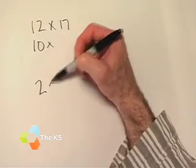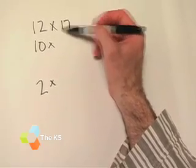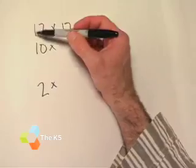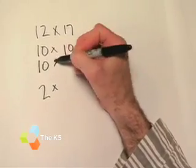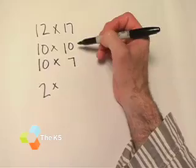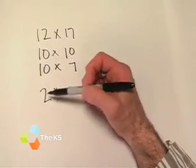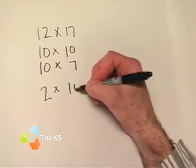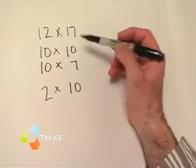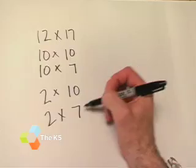Then what we're going to do is take these and multiply them by the broken down 17. 10 times the 10 in the 17, and 10 times the 7 in the 17. Now we'll take the 2 from the 12. We'll multiply the 2 by the 10 in 17, and the 2 by the 7 in 17.